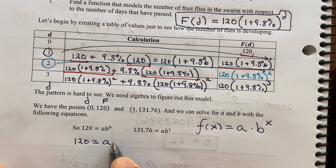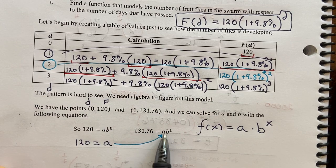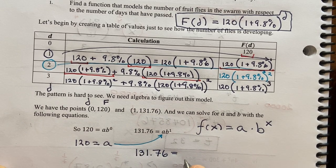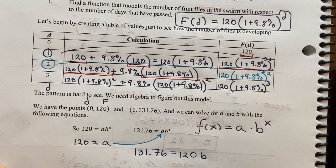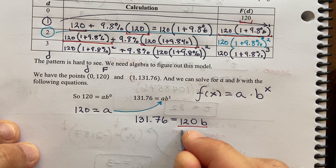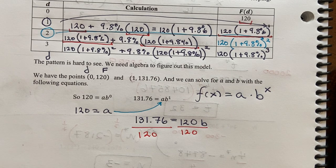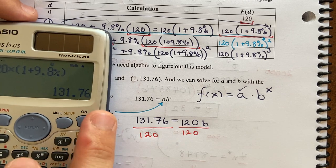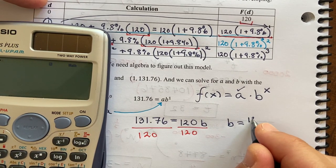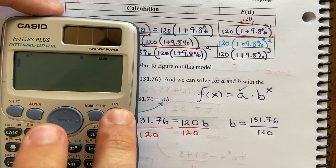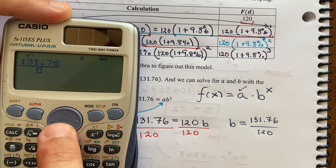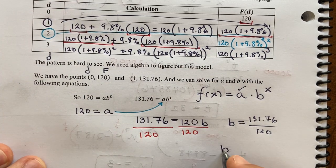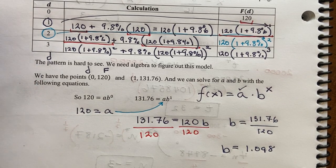After you know a, you can plug a in to this equation. After one day, we have this many fruit flies. So we can write 131.76 equals 120 times b. b to the 1 is just b. Divide by 120. So b is 131.76 over 120. I'm typing that in now. I get 1.098.